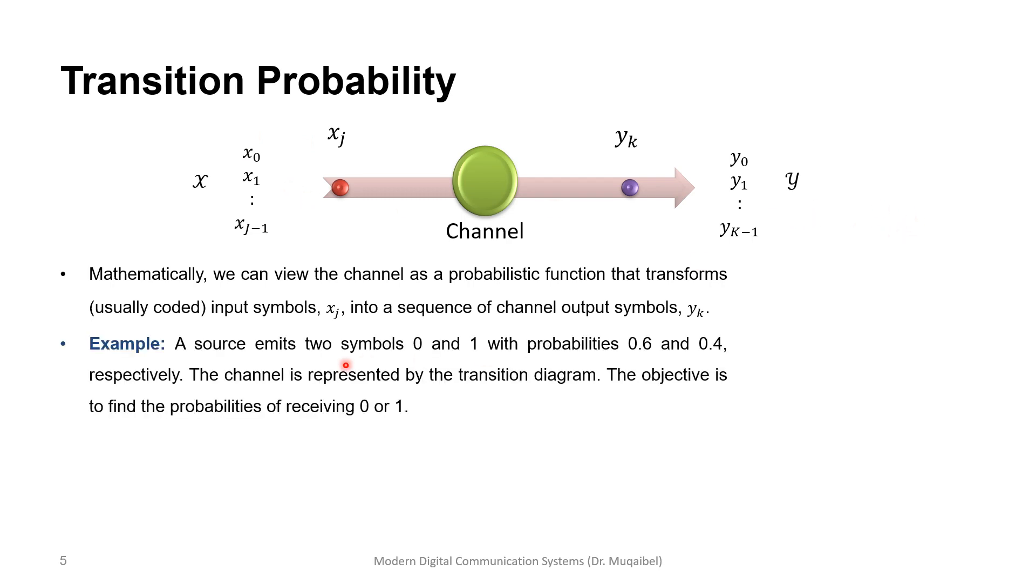An example: let's say that a source emits two symbols, zero and one, with probabilities 0.6 and 0.4 respectively. The channel is represented by a transition diagram, and the objective is to find the probabilities of receiving zero or one. These are called the transition probabilities. I am showing them in colors here. All these four are the transition probabilities. Those two probabilities are the prior probabilities. The question is: what's the probability of receiving zero or one? This is our channel.